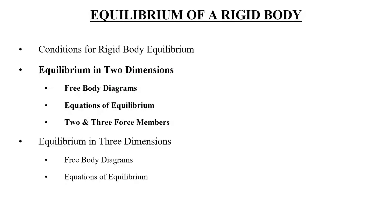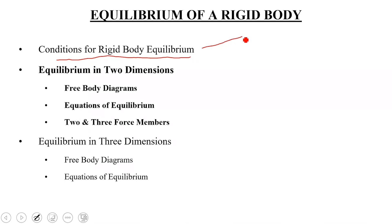Last week, we started chapter 5, regarding equilibrium of a rigid body. A rigid body is defined as incapable of any deformation, but it has some size, a center of gravity, and weight. For a rigid body to be in equilibrium, there shouldn't be any unbalanced force acting on it, and similarly, there shouldn't be any unbalanced moment acting on it. The rigid body is called to be in equilibrium if it satisfies these two conditions.